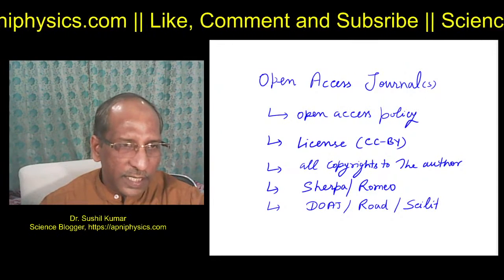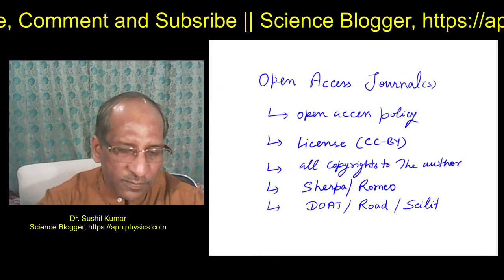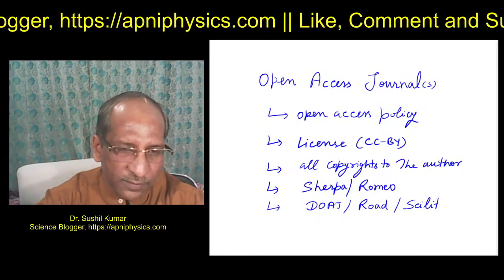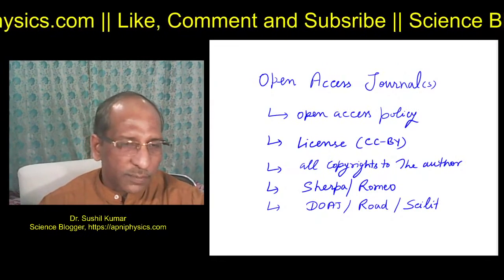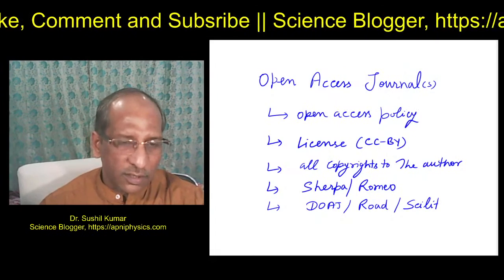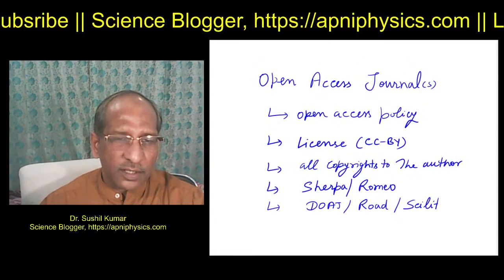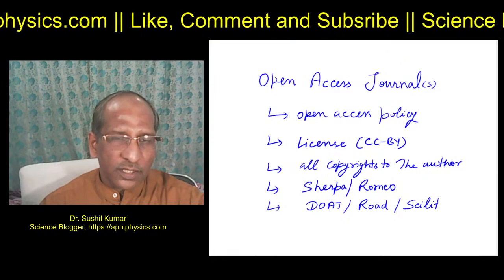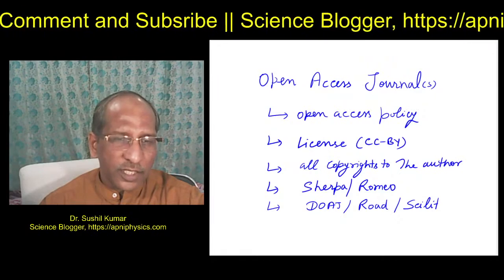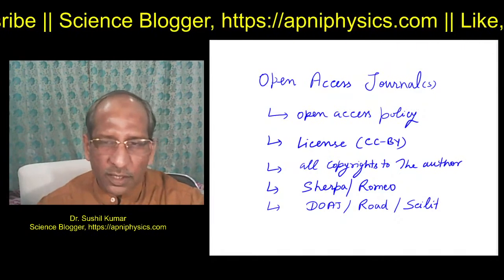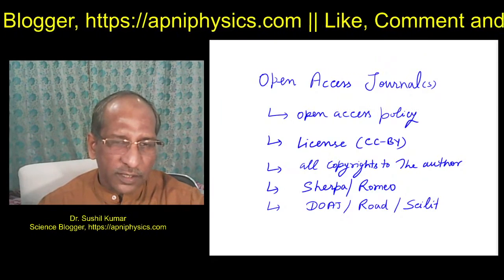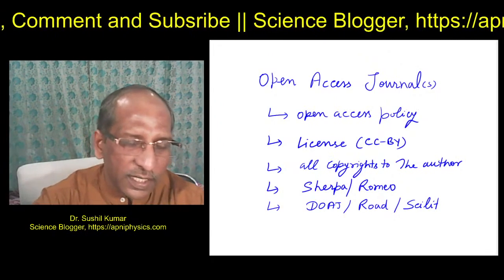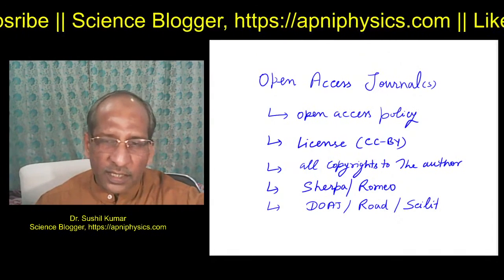'Indexed' means DOAJ collects all article and journal information from publishers using certain technologies. You can see journal names like 'Living Reviews in Relativity' and 'Journal of Medical Physics.' The DOAJ Seal means that those journals are 100% following open access policy — specifically the CC BY license, which I discussed in an earlier video.